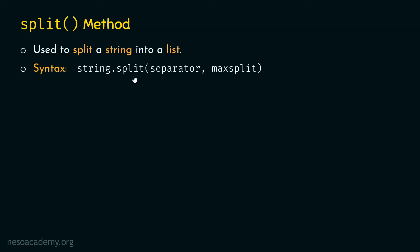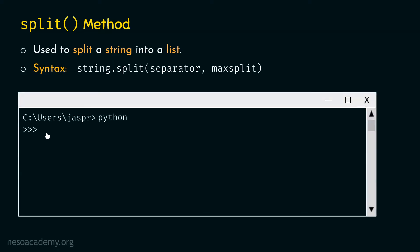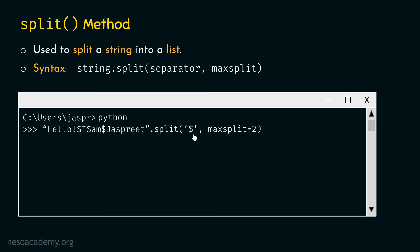Let's understand the split method with the help of an example. We need to open the command prompt and activate the Python interactive shell. Let's type this string: 'Hello! $i$m$. Just breathe'. After this string, we will type dot split with dollar as the separator and max split equal to two. So, to the split method we have passed two arguments: first is the separator dollar, and second is max split equal to two.